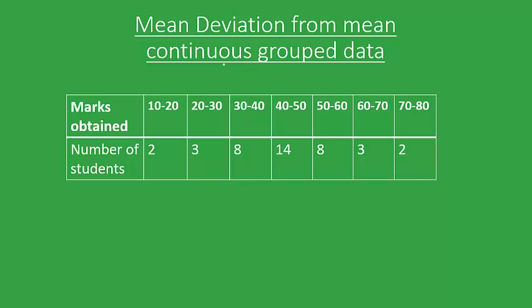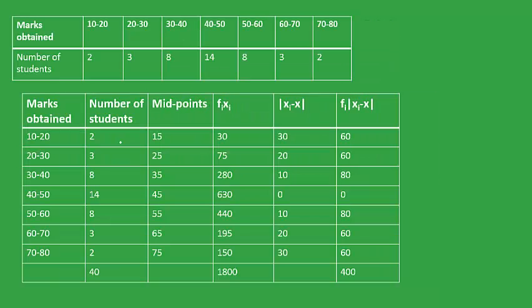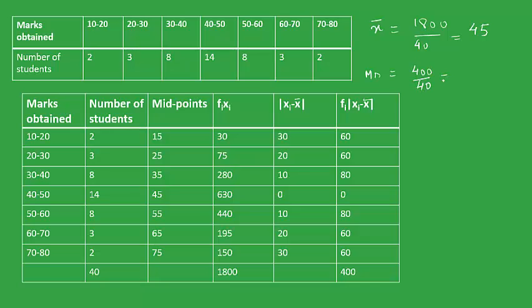Now let's calculate the mean deviation about the mean using continuous grouped data. The only difference here is that we use the midpoint of each interval as xi; all other steps remain the same as in discrete grouped data. We create columns for fi, xi (midpoints), fi·xi, and |xi − x̄|. We calculate x̄ = (Σfi·xi) / Σfi = 1800 / 40 = 45, and the mean deviation = (Σfi·|xi − x̄|) / Σfi = 400 / 40 = 10.